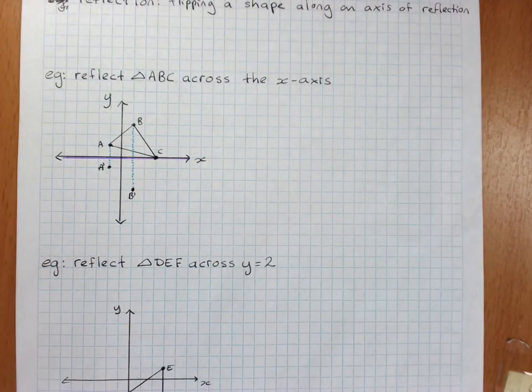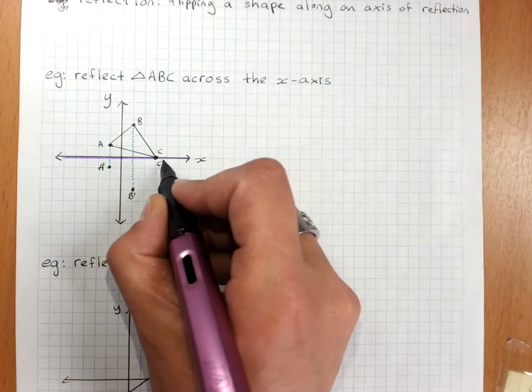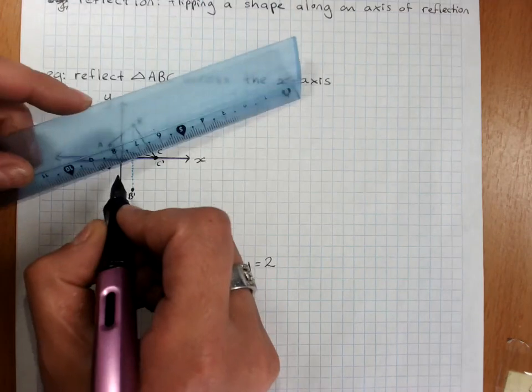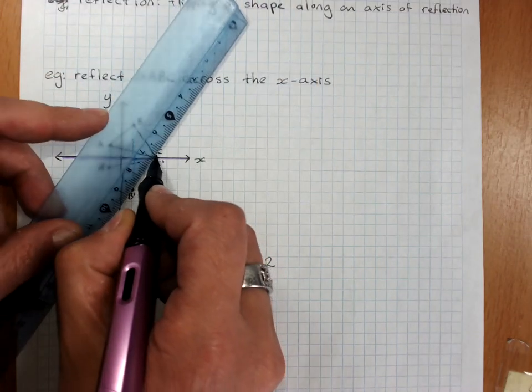And point C stays exactly where it was, because it's on the mirror, so that's new C as well, and we can make our shape.